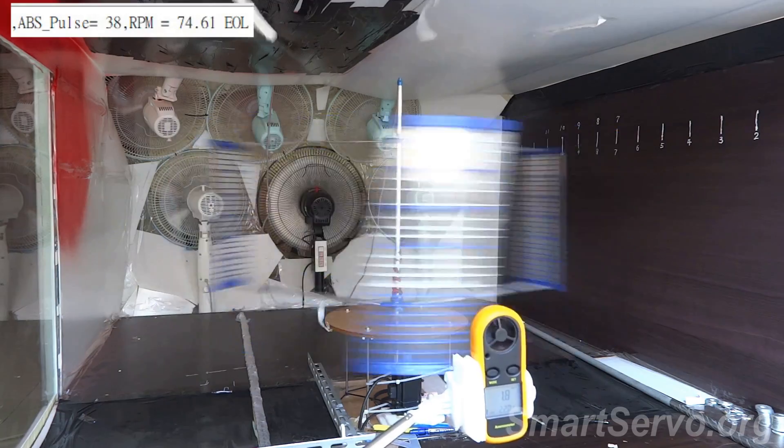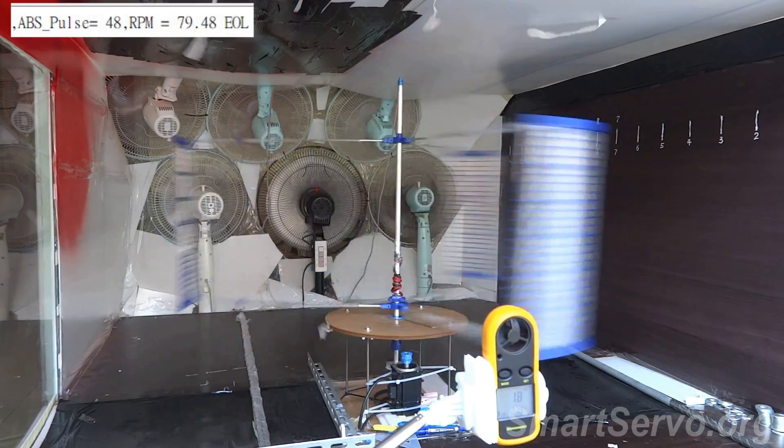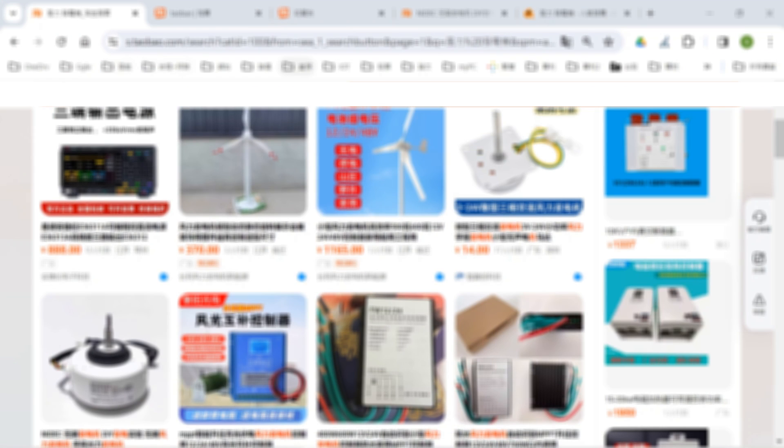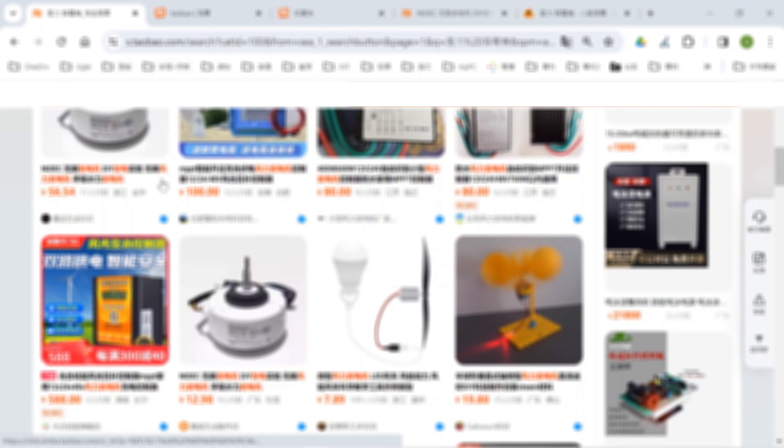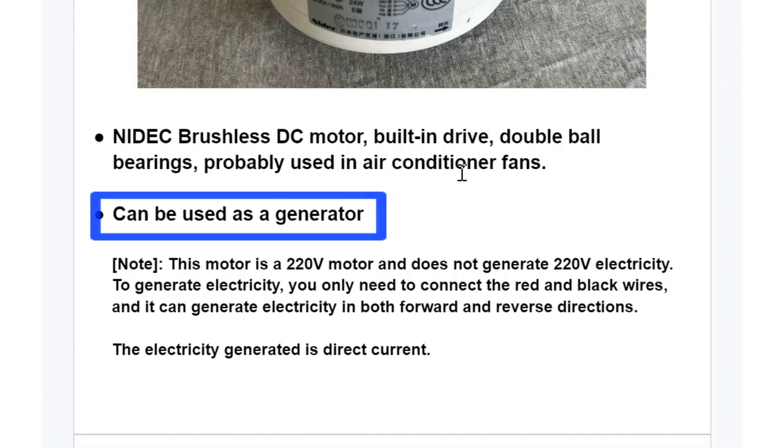The Darius wind turbine has been tested for some time, and it's time to start generating electricity. Search online for generators. This one seems to come up quite often. In addition to being a generator, it also has a built-in driver and can be used as a motor. Maybe it's the motor for the air conditioner.